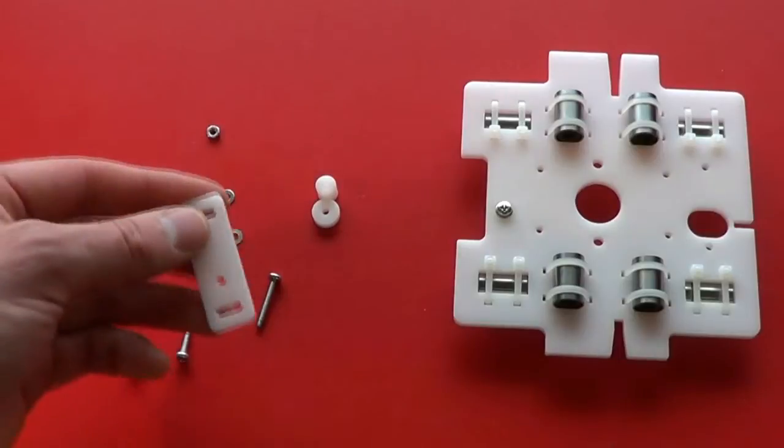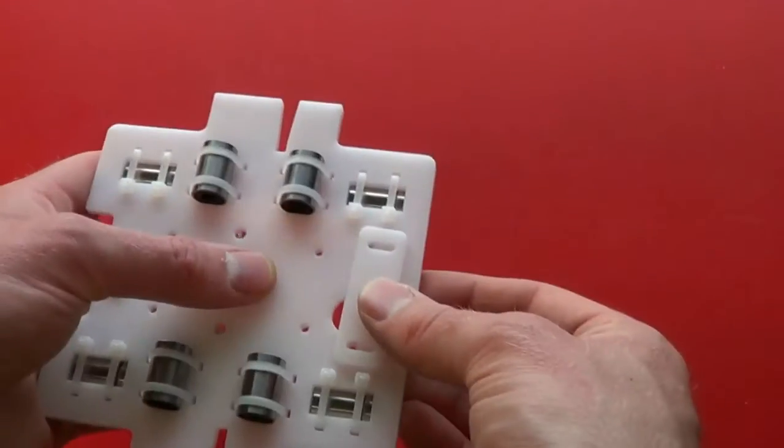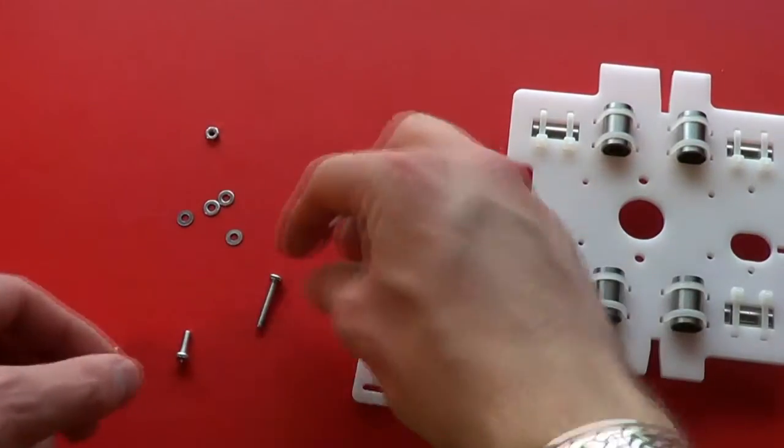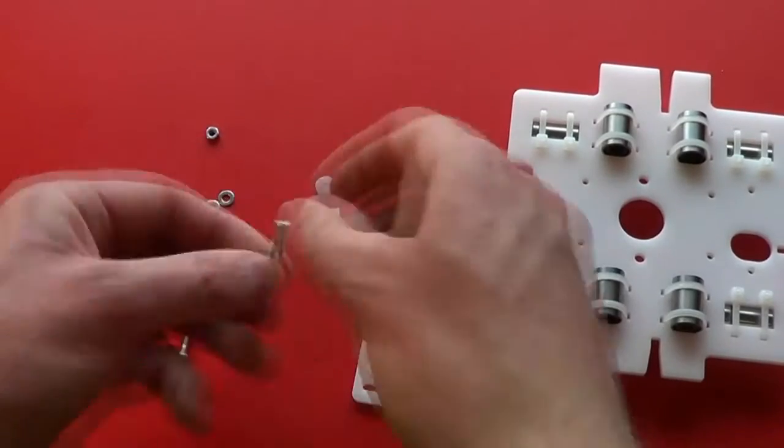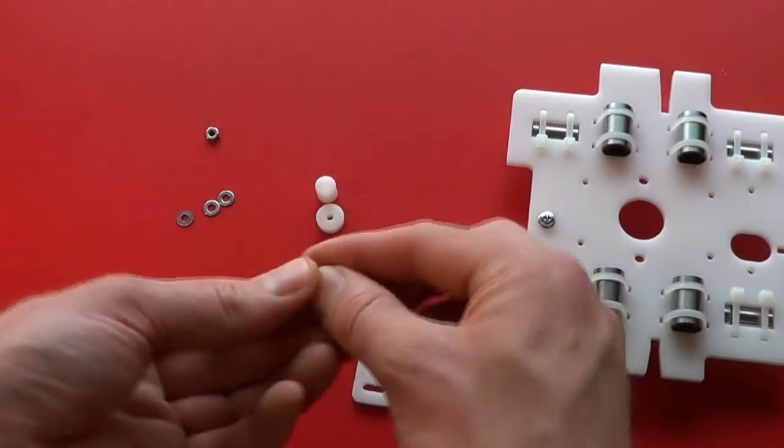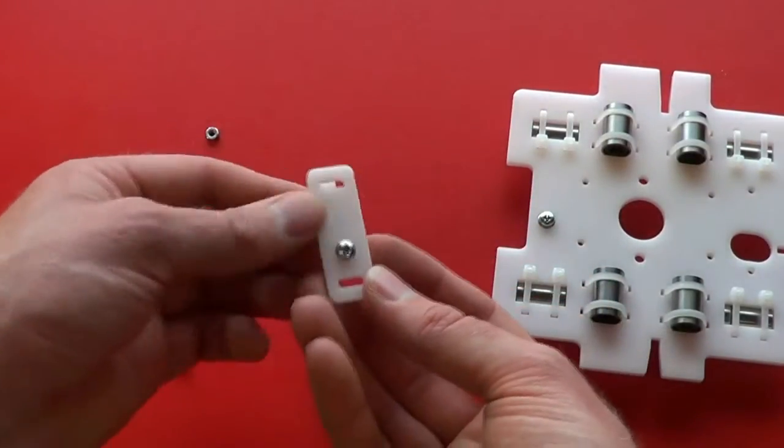Next we'll do the right anchor post. This is the tensioner plate. By moving it, we can pull the belt tight. So we take the long screw, that's the 20mm one, a washer, put it through the tensioner plate.